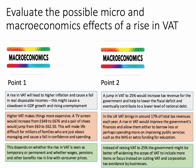A second macro point is that a rise in VAT would increase the tax revenue flow into the government, helping it to lower the fiscal deficit and eventually contribute to a lower level of national debt. UK VAT brings in about 17% of total tax revenues every year. A rise in VAT would increase the flow of money coming into the government, and this in turn would allow them either to borrow less, bring down the deficit, or use some of the extra revenue to spend more on key public services such as the NHS or extra funding for education.